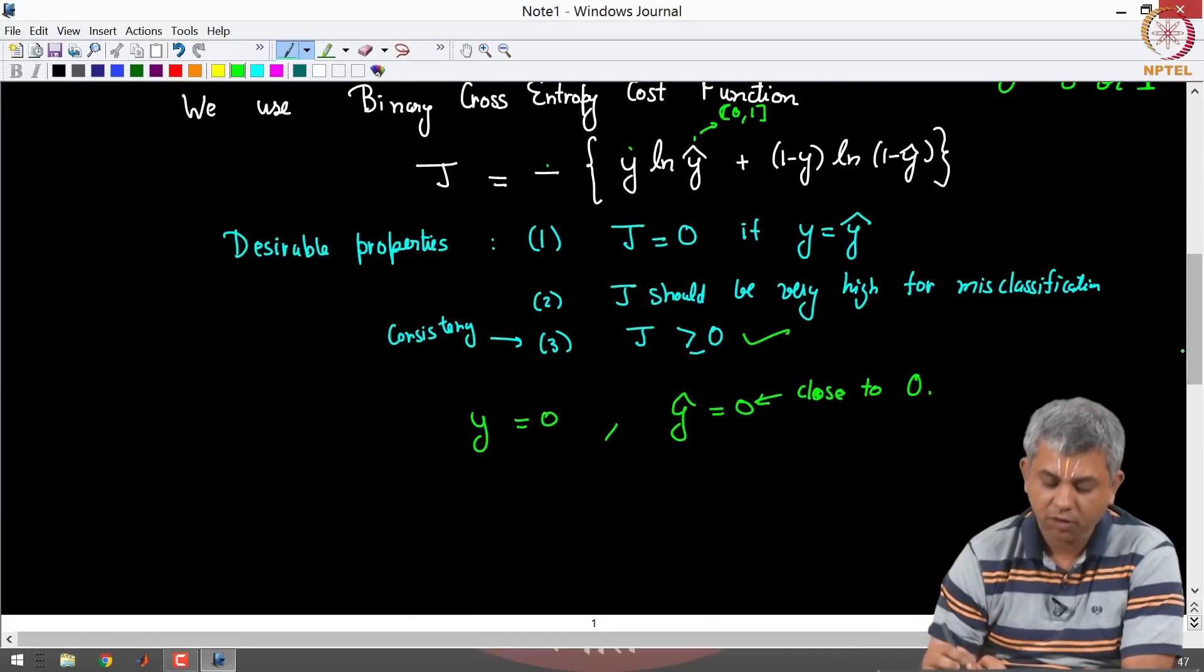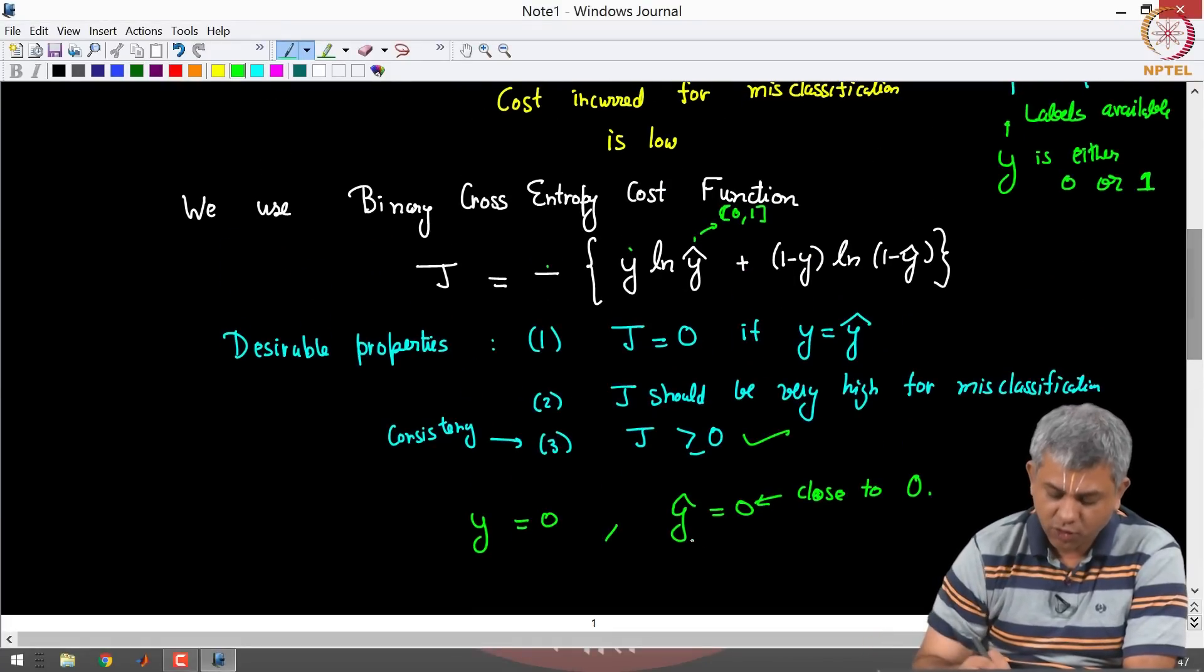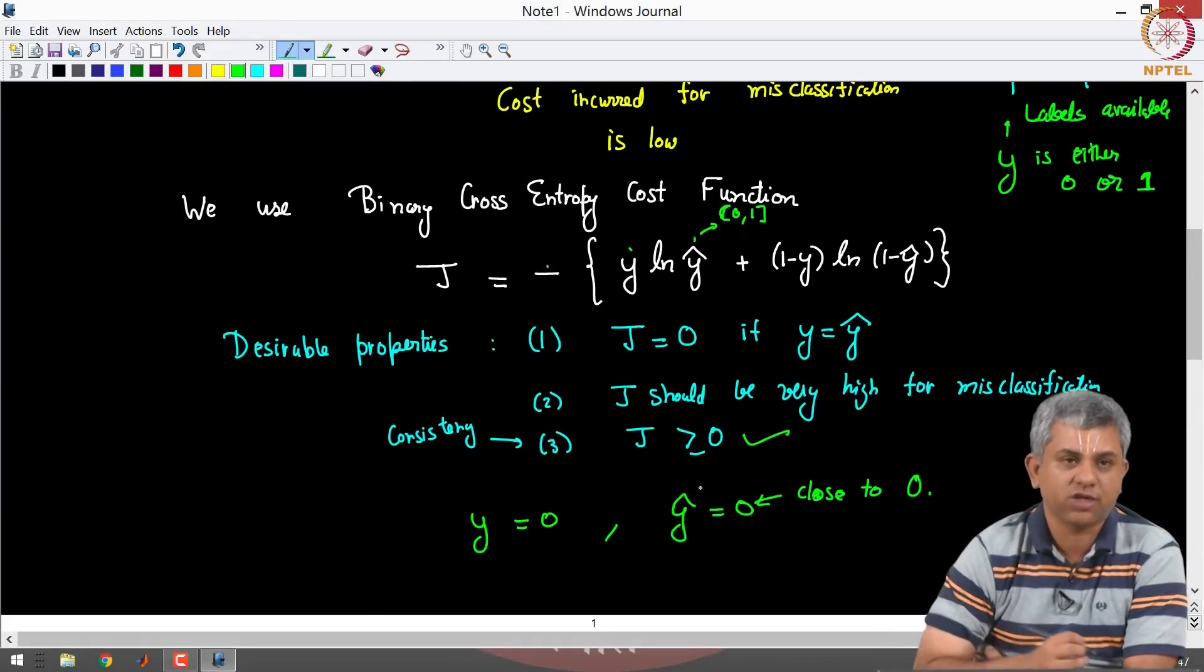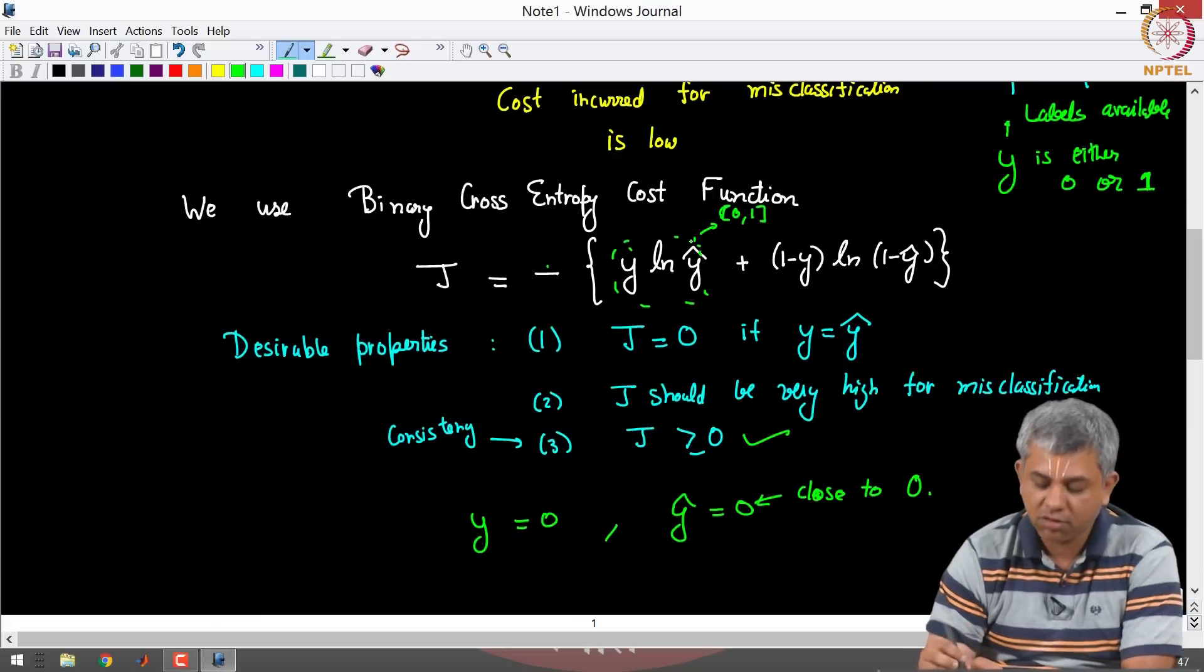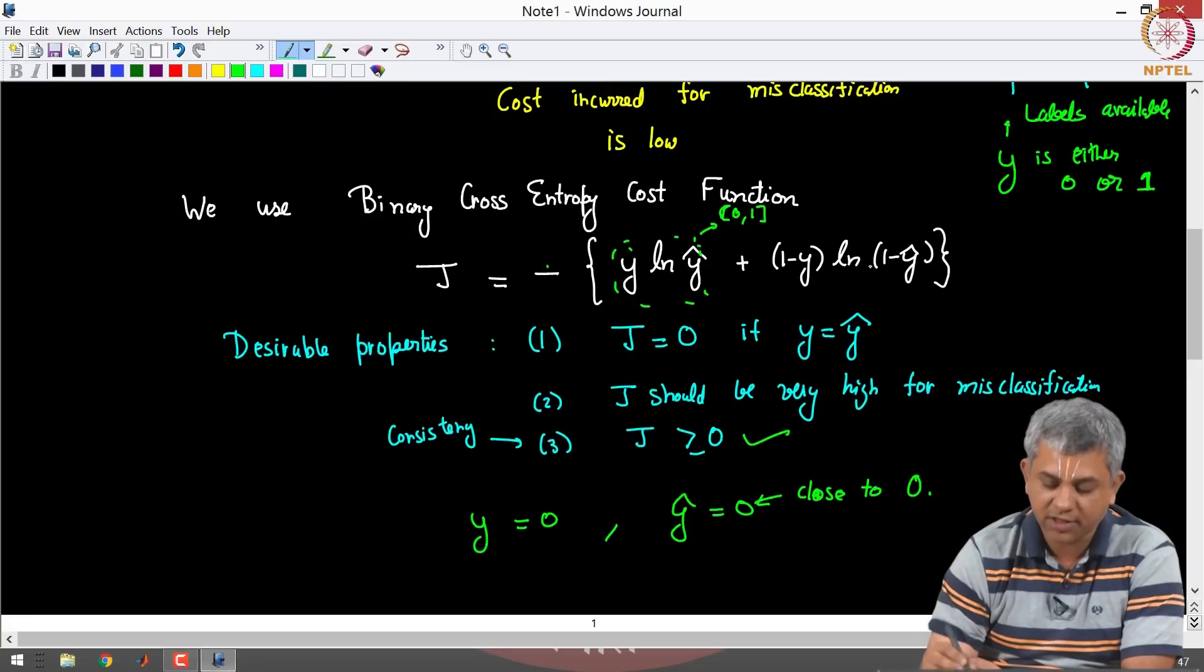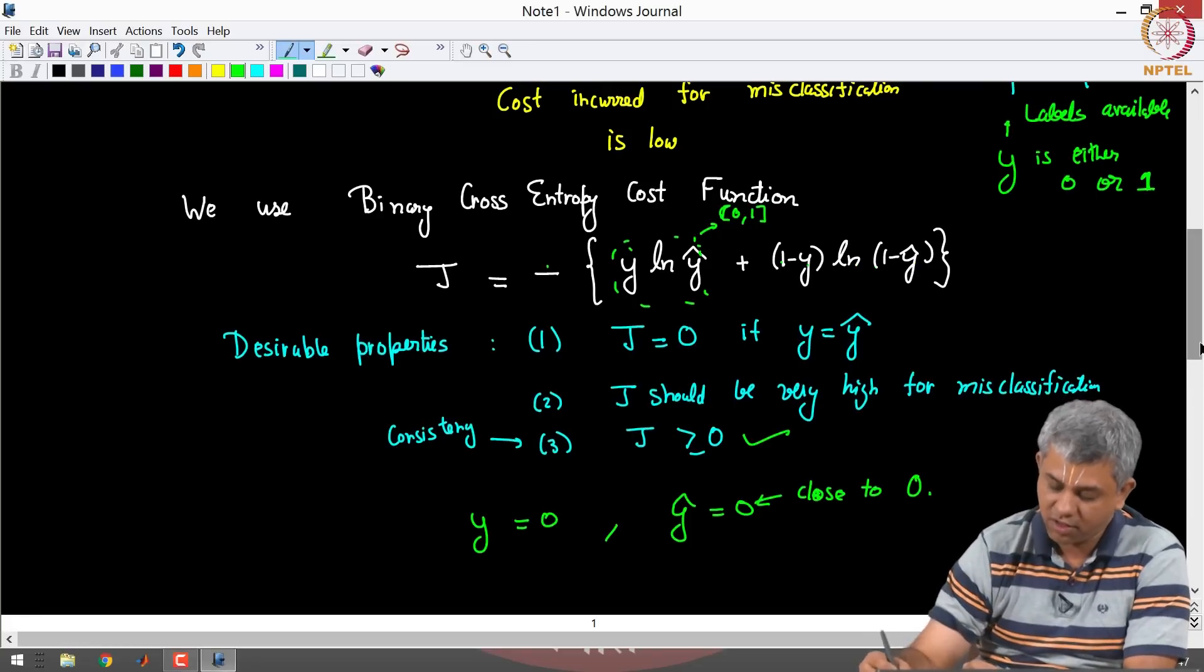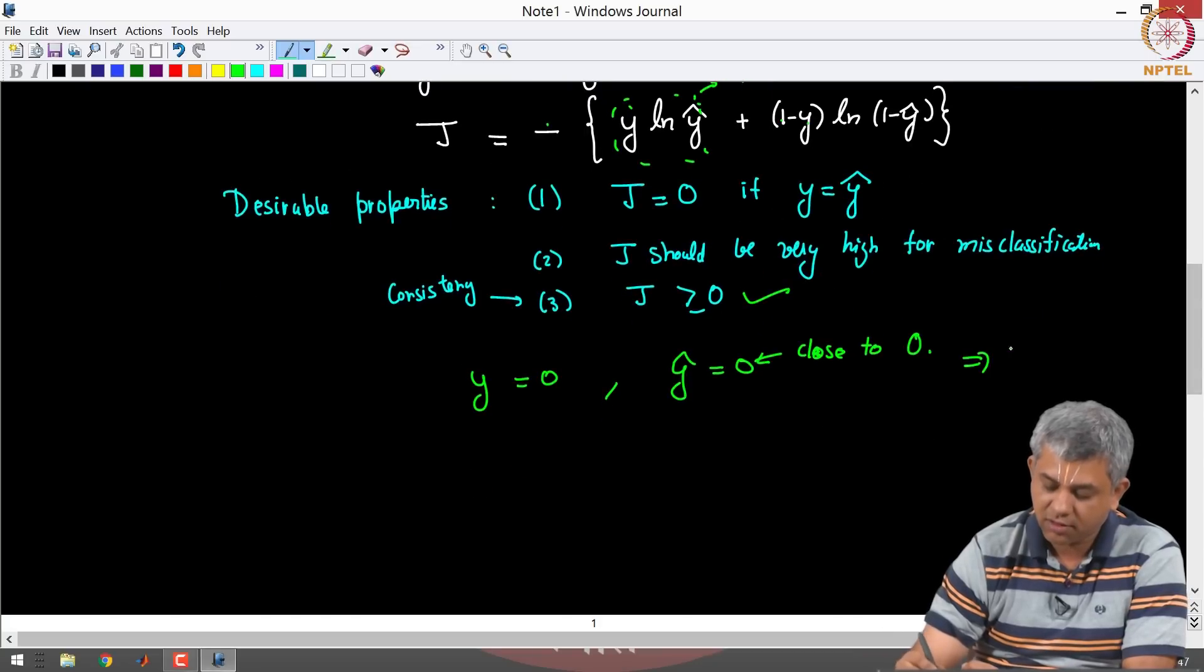So in case Y is 0 and Y hat is close to 0, let's say 10 power minus 6, then this term is close to 0 and this term is again going to become close to 0. Why is that? This is 1 and 1 minus Y hat, this becomes ln of 1, so this becomes 0. J is approximately 0.